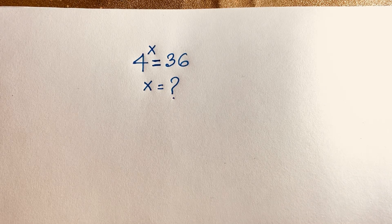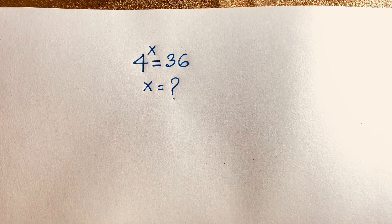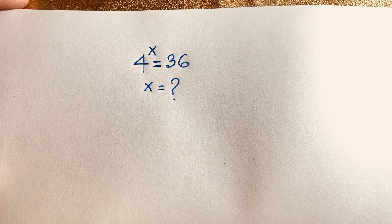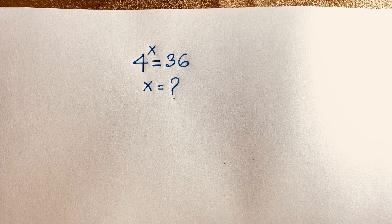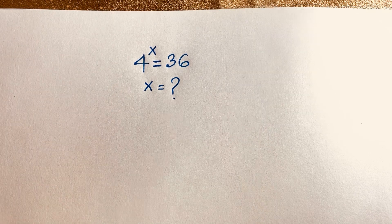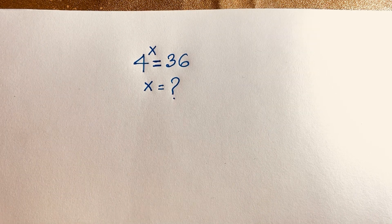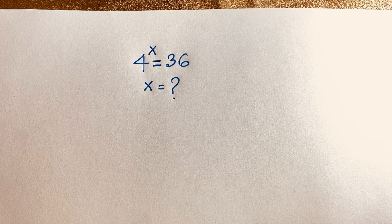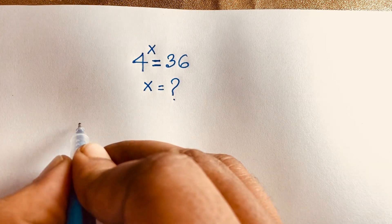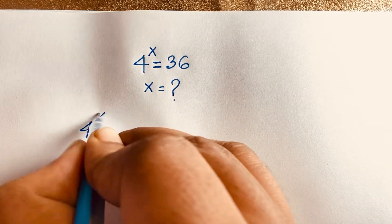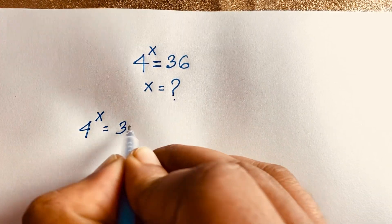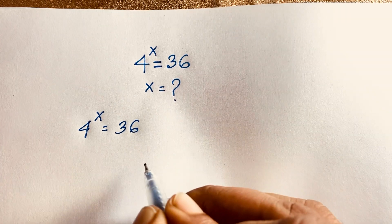Hello everyone. In this video, we have solved a nice exponential equation: 4 to the power x is equal to 36. We have found out what is the value of x in this exponential equation. So our question will be 4 to the power x is equal to 36.